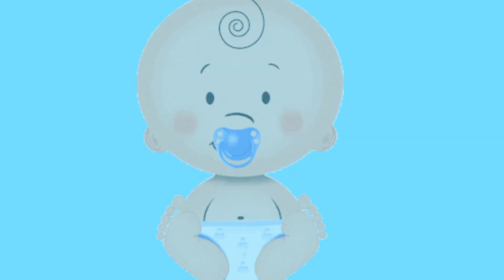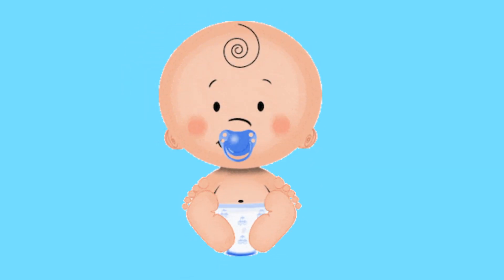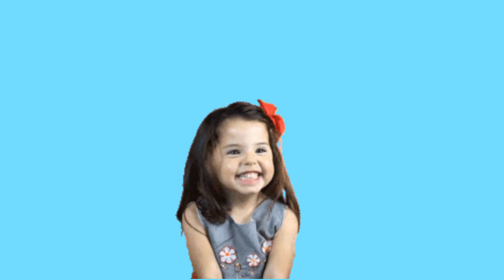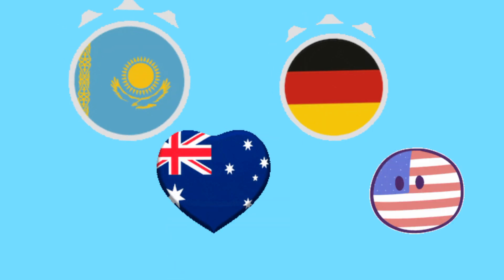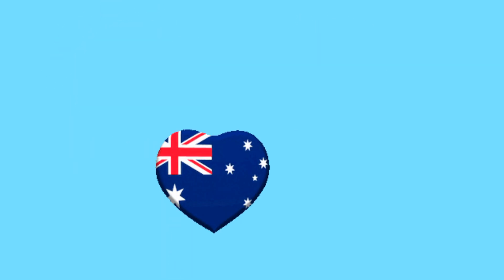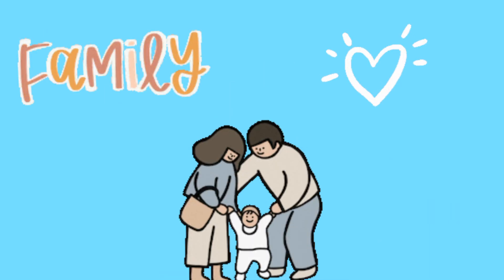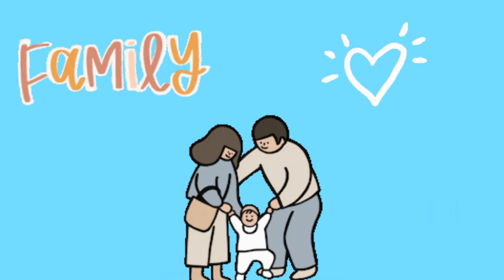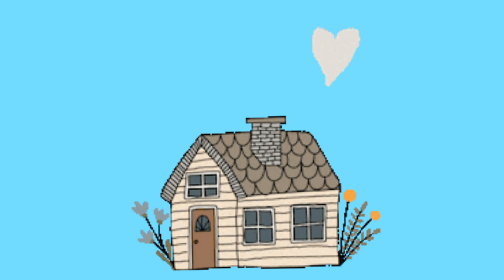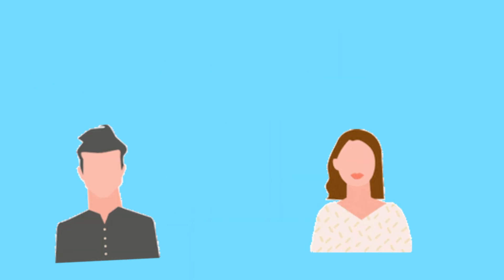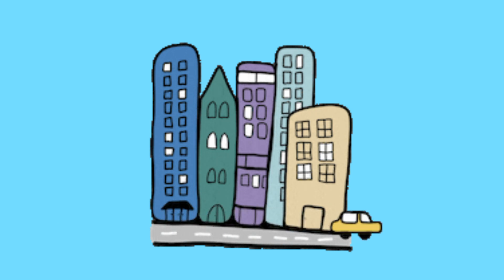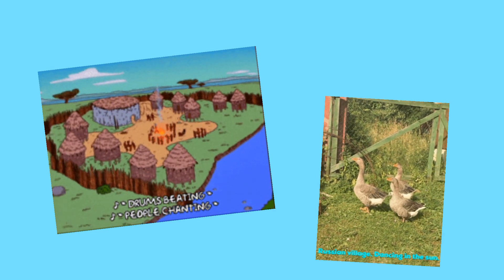Now you should write down all new words: Baby, Child, Country, City, Family, House, Man, Person, Town, Village, Woman.